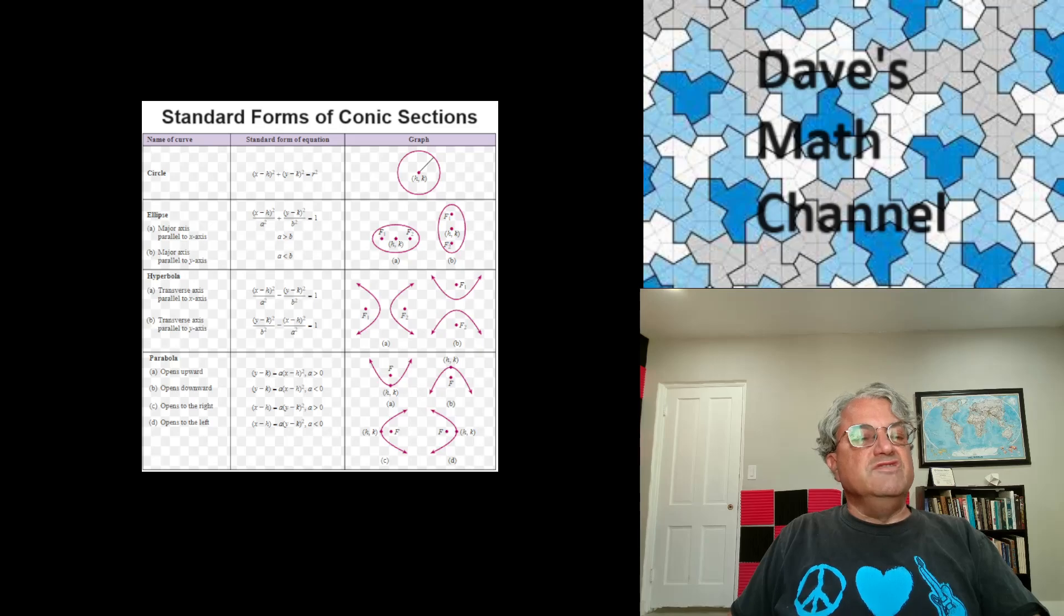And then hyperbolas, you have similar equations for hyperbolas. I think it's x minus h quantity squared over a squared plus y minus k quantity squared over b squared equals 1. And then that gives you these things that are shown on the right. And one thing I didn't mention about the ellipses and the hyperbolas, they have these points in them known as foci.